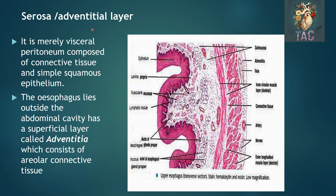The fourth layer is the serosa or adventitia. Outer to the muscularis externa is the serosa or adventitia, and it depends upon the presence of the peritoneum. The peritoneum is a simple squamous epithelium. Where the outer covering of the GI tract is the peritoneum, the fourth layer is called serosa. Where the peritoneum does not cover the outer part of the tubular GI tract, the outer layer is adventitia. The esophagus is also an exception because it is usually covered by adventitia where it is present in the thoracic cavity, while a small part entering the abdominal cavity is covered by peritoneum and has serosa.